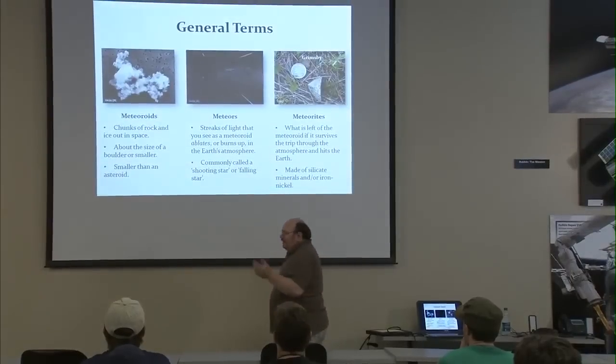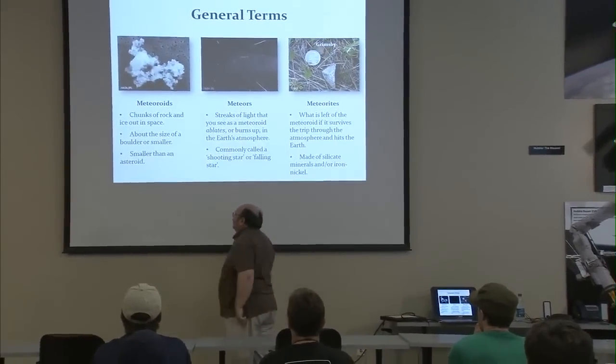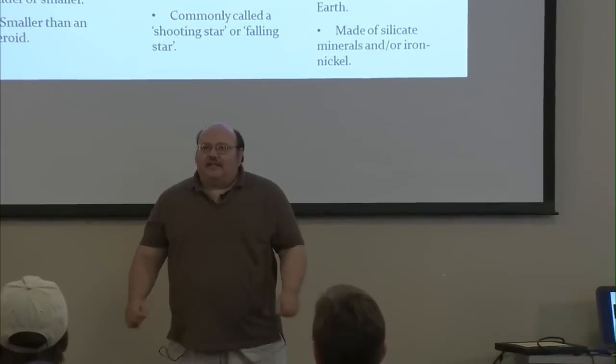Meteoroid, meteor, meteorite — what's the difference? Well, there is a difference, though people use them interchangeably a lot. A meteoroid is a chunk of rock or ice out in space, about the size of a boulder or smaller. What's the difference between a meteoroid and an asteroid? It's all a question of size — there is no dividing line. Some people say a rock a meter across is an asteroid; others say it's got to be about 10 meters across. I prefer thinking something bigger than a garage, which is 10 yards, is an asteroid. Something the size of a beach ball, I would call that a meteoroid. But you will get a different answer depending on which scientist you talk to — I'm giving you my opinion. There is no formal definition.